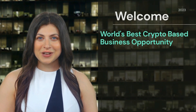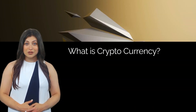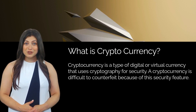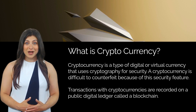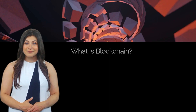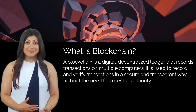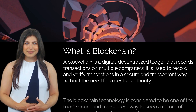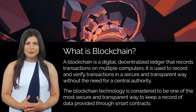Welcome to AuxCash Pro. First, let's understand cryptocurrency. Cryptocurrency is a type of digital or virtual currency that uses cryptography for security. A cryptocurrency is difficult to counterfeit because of its security features. Transactions with cryptocurrencies are recorded on a public digital ledger called a blockchain. Blockchain is a digital decentralized ledger that records transactions on multiple computers in a secure and transparent way, without the need for a central authority. The blockchain technology is considered one of the most secure and transparent ways to keep records of data through smart contracts.